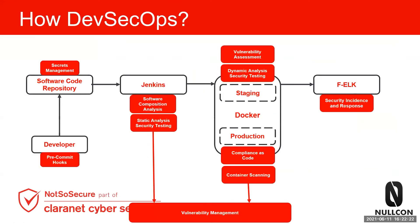So this is what our entire DevSecOps setup looks like: we have pre-commit hooks, secrets management, software composition analysis (SCA), SAST, DAST, vulnerability assessment, compliance scanning, container scanning, and security incidents and response. All these results are then managed and pushed into the vulnerability management system.